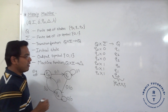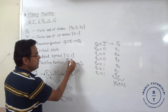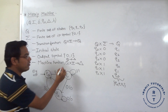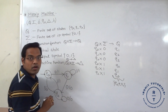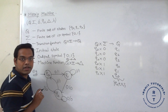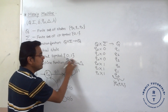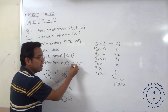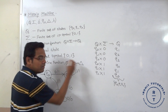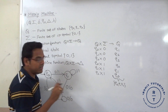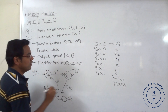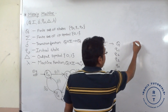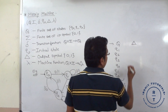In Mure machine, capital Q decides the output — with the state, output is present, so capital Q decides what output is present at that particular state. But in mille machine, whenever at any state any input symbol occurs, it gives us an output symbol. So this is represented by delta. So how we represent this delta? That is output.